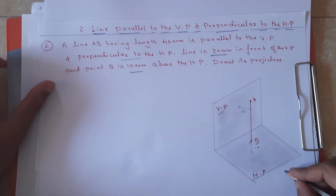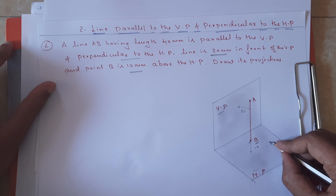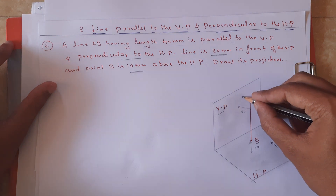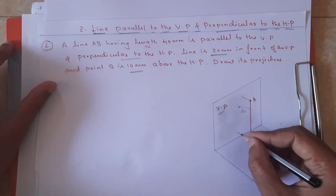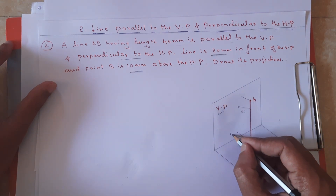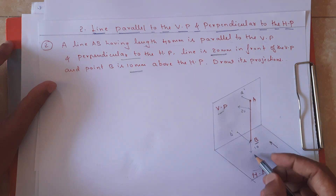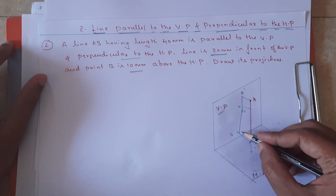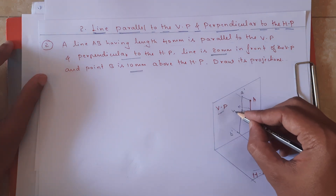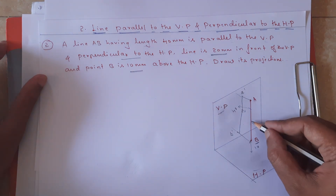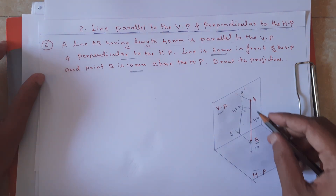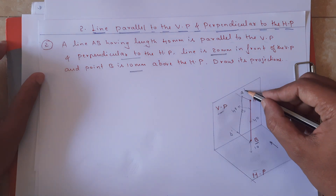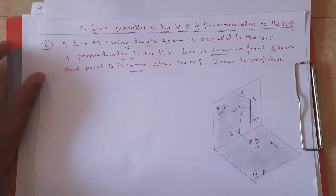The front view means the observer is looking from the front side, so we get the front view on the vertical plane. I am going to locate b' and a' and join them — this is the front view. The distance from a' to b' will also be 40mm. It is 40mm because the true length of the line is 40mm; since this line is parallel to the vertical plane, we get the true length in the front view.